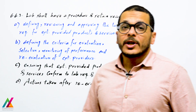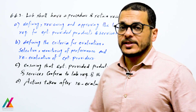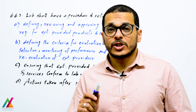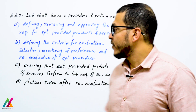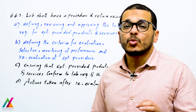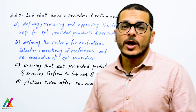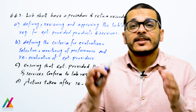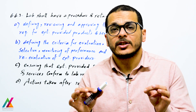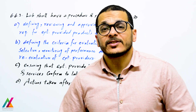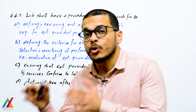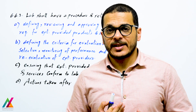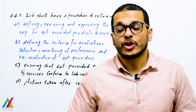The lab shall have a procedure and retain records for all of these points. You can combine them into one procedure. The first point is defining, reviewing, and approving the lab's requirements for externally provided products and services — determining what the requirements are for products or services from external providers.